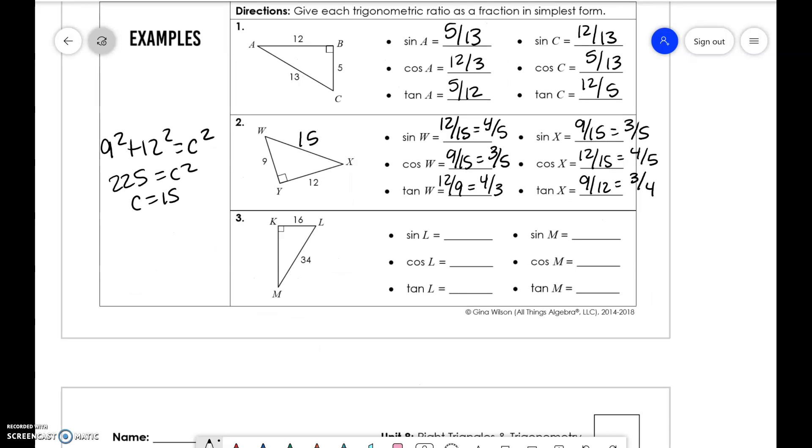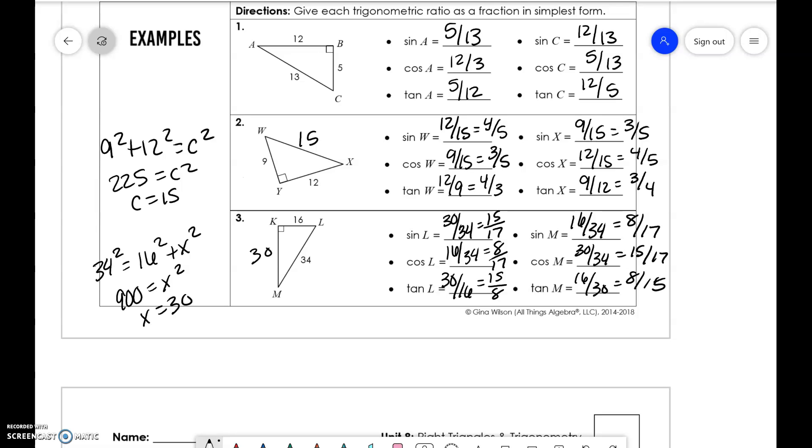And then lastly, this example, we have another right triangle, but we don't know what this side is. So we need to figure that out. And then we'll be good to go to solve this. So we have 30 over 34, which reduces to 15 over 17. We have 16 over 34, which reduces to 8 over 17. And then we have tangent, which is 30 over 16, which is 15 over 8. Then for M, we have 16 over 34, 8 over 17. And then we have 30 over 34, which is 15 over 17. And 16 over 30, which is 8 over 15.